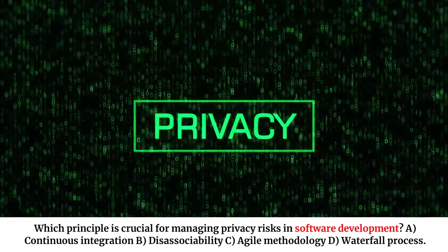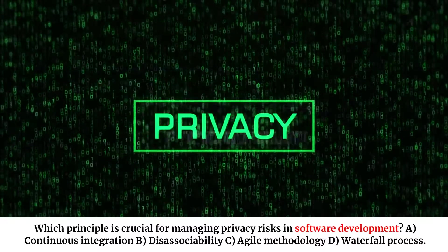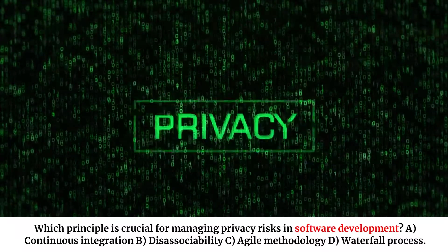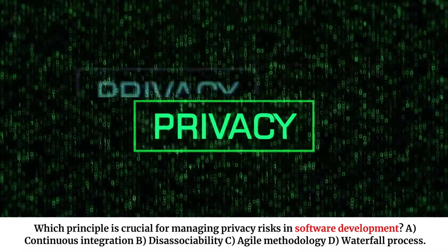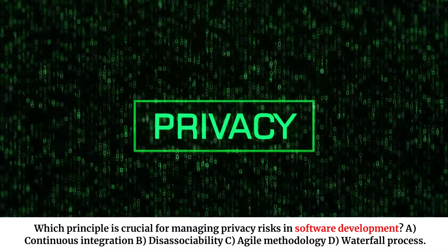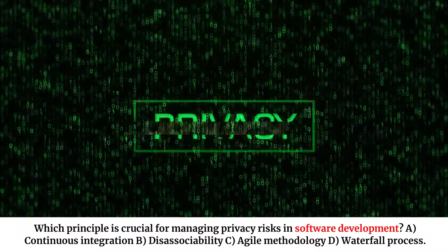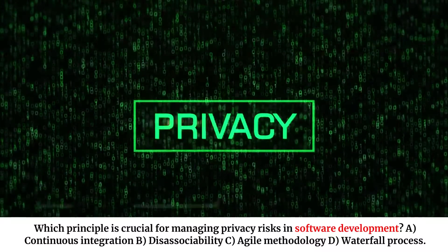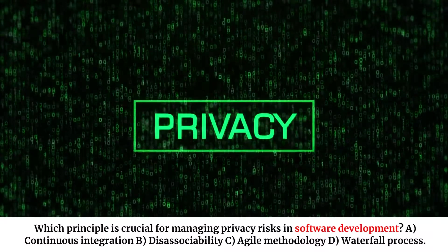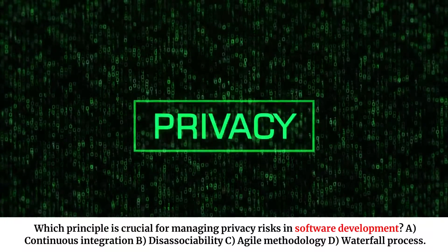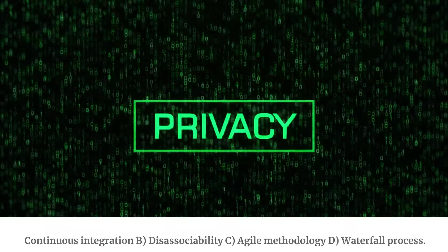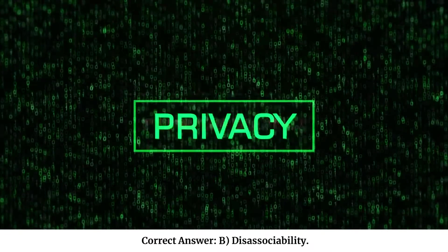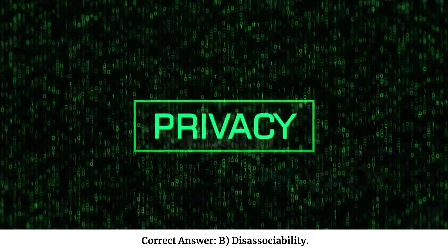Which principle is crucial for managing privacy risks in software development? A. Continuous integration. B. Dissociability. C. Agile methodology. D. Waterfall process. Correct answer: B. Dissociability.